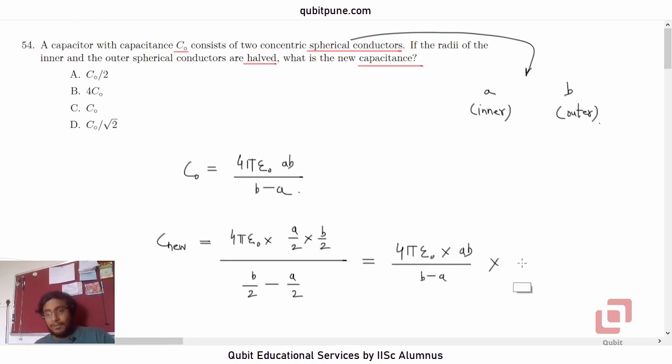Now 2 into 2 will be 4 and this 2 is in the denominator, so that will go to the numerator. So 4πε₀ into AB upon B minus A is C₀. 2 by 4 is half, so C₀ by 2 is the answer, option A.